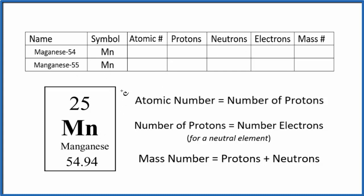The first thing we notice when we look at the periodic table, this 25 here, that's the atomic number. So for both isotopes of manganese, we have 25 as the atomic number.